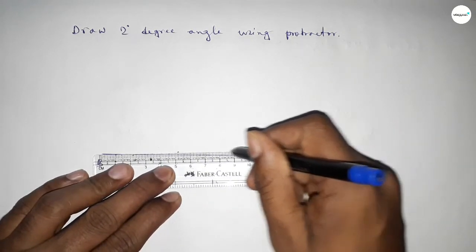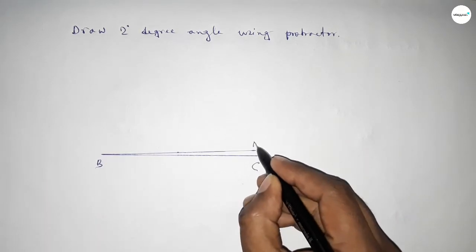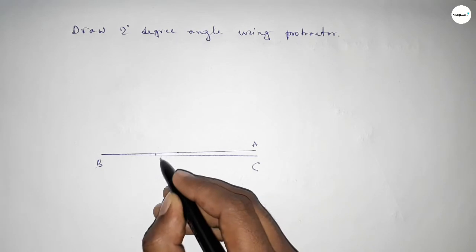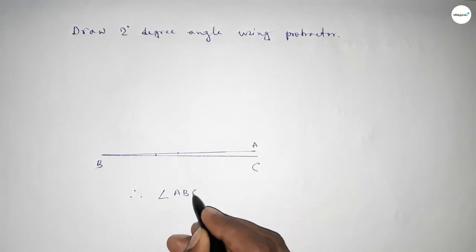to get a 2-degree angle and taking here point A. So angle ABC, therefore angle ABC equals 2